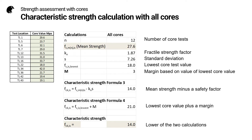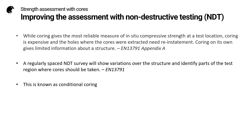This is not surprising as we have only 12 cores. If we took 100 cores, we would only expect five of them to be lower than the characteristic strength. It's important to note two statements from EN 13791: while coring gives the most reliable measure of in-situ compressive strength at a test location, coring is expensive and the holes where the cores were extracted need reinstatement. Coring on its own gives limited information about the structure.